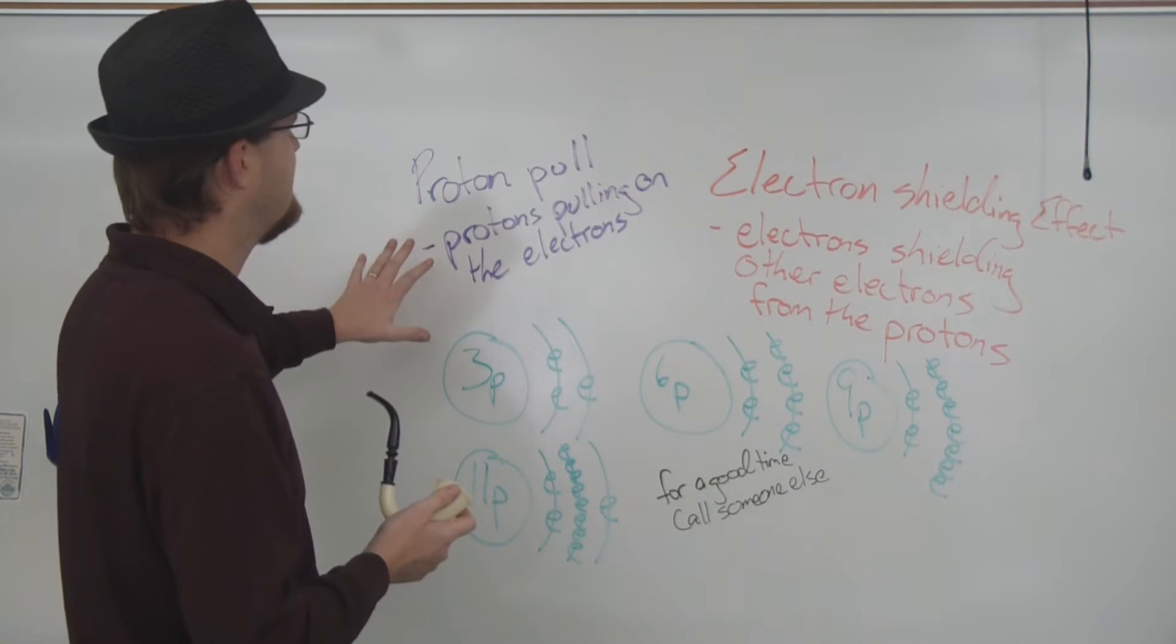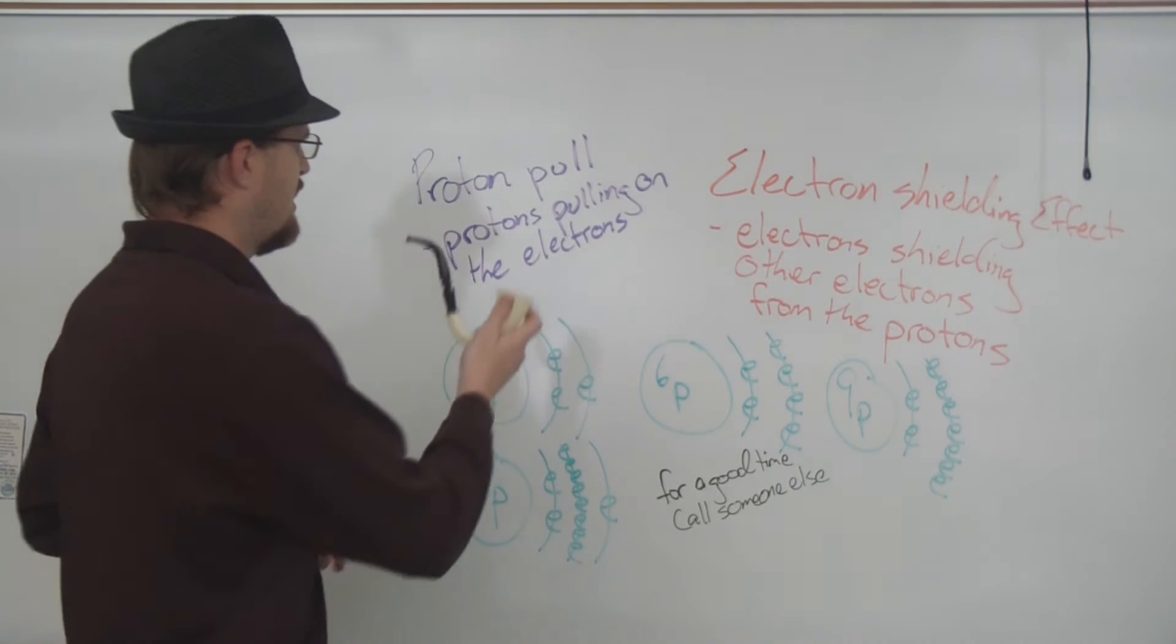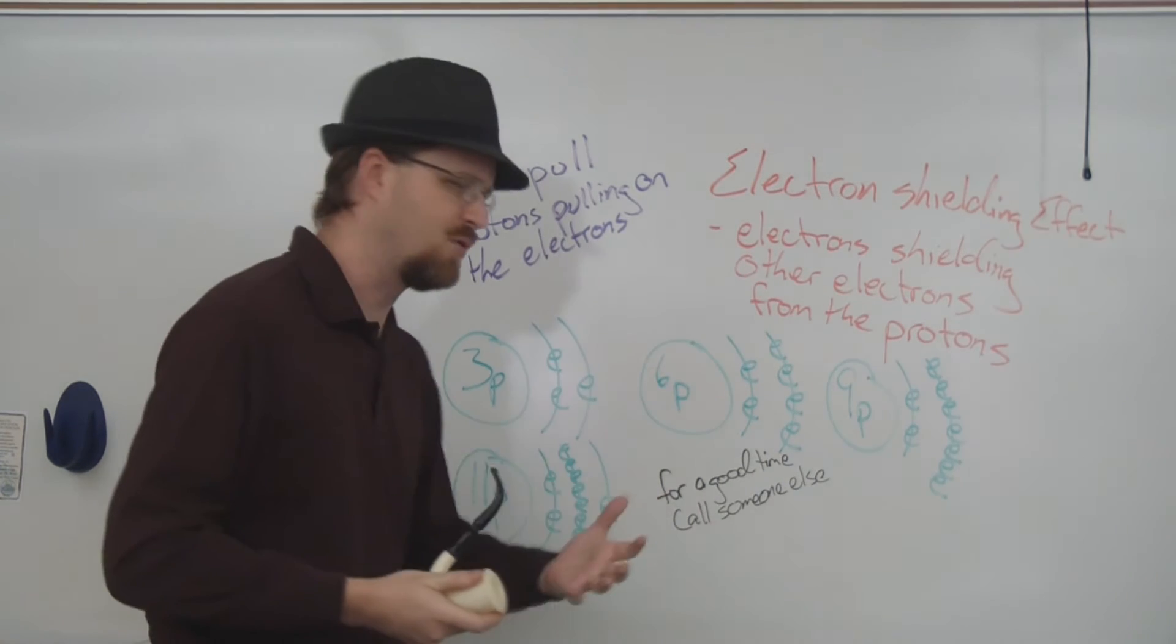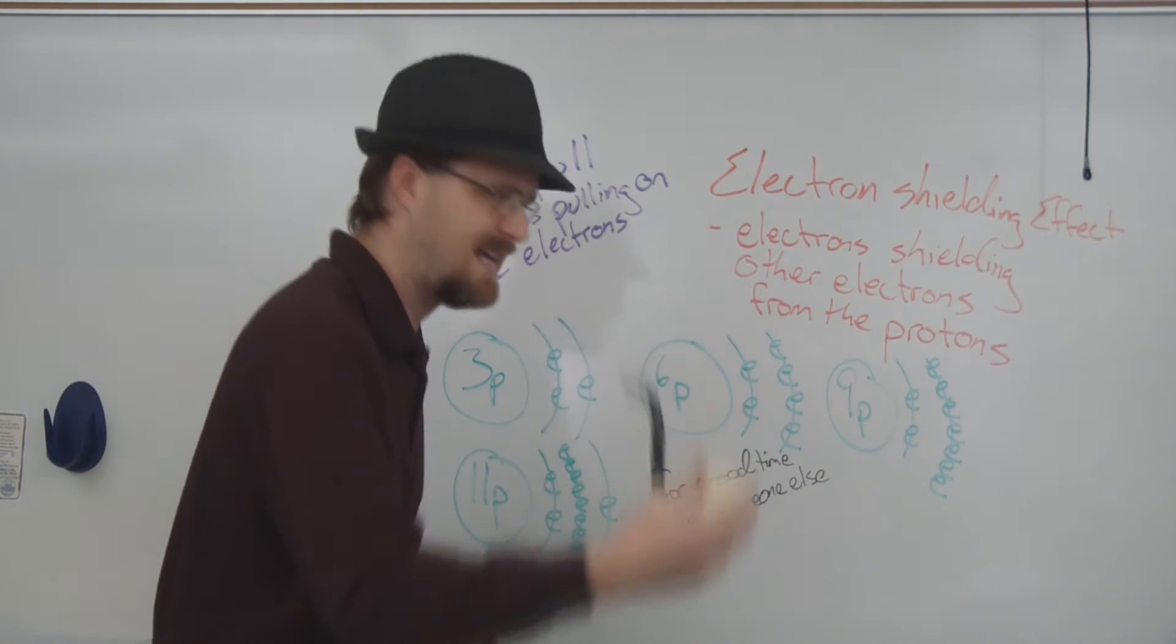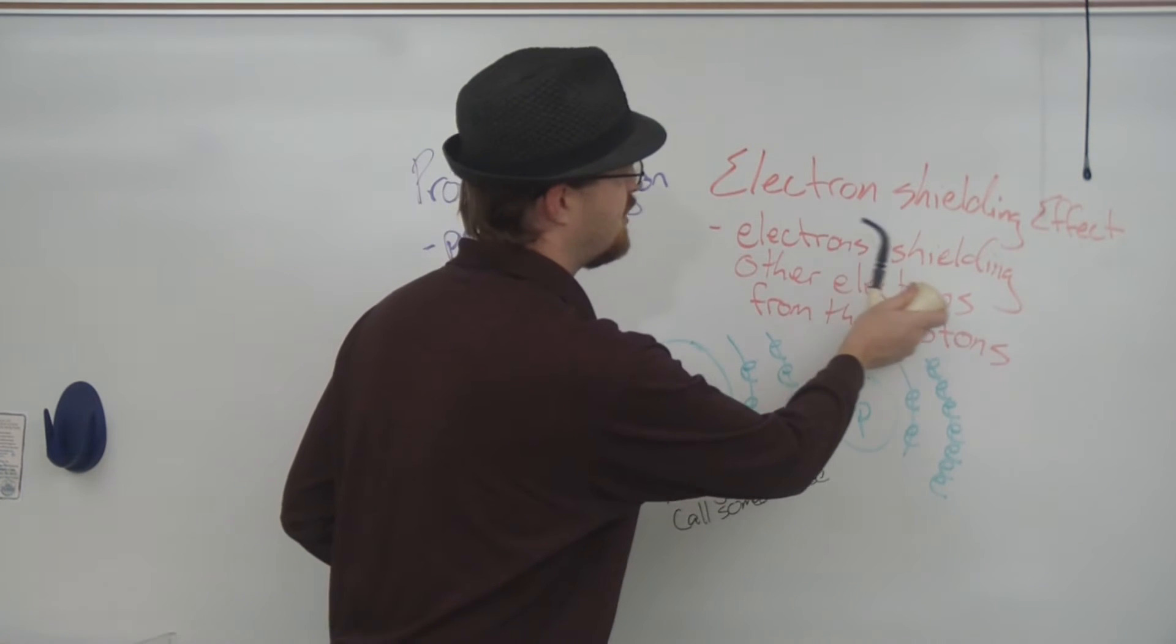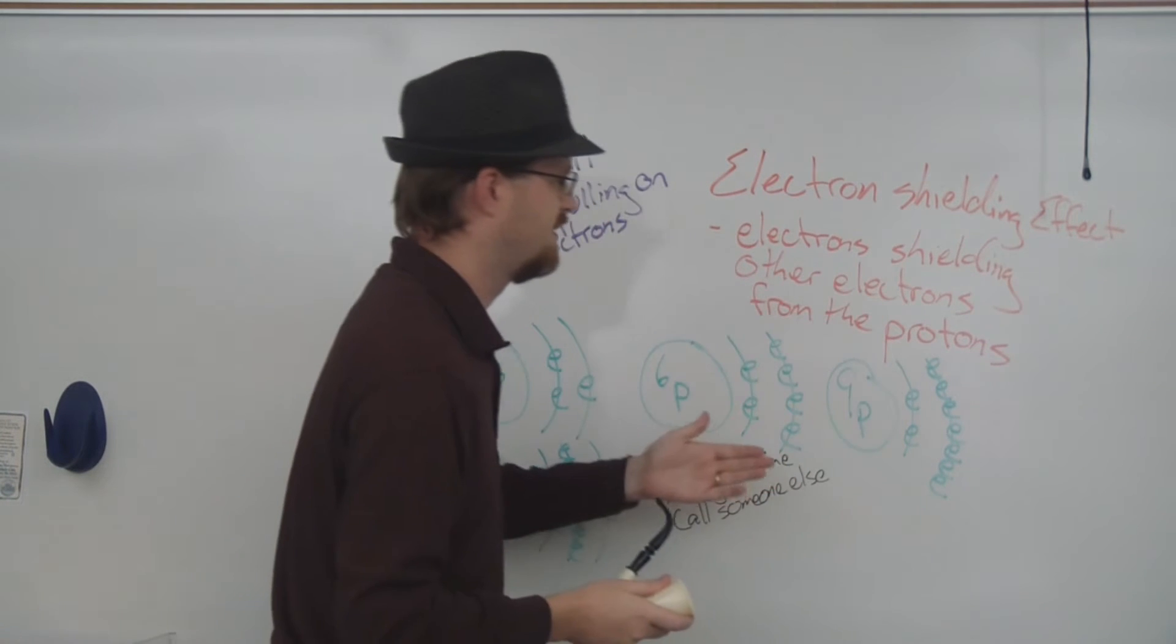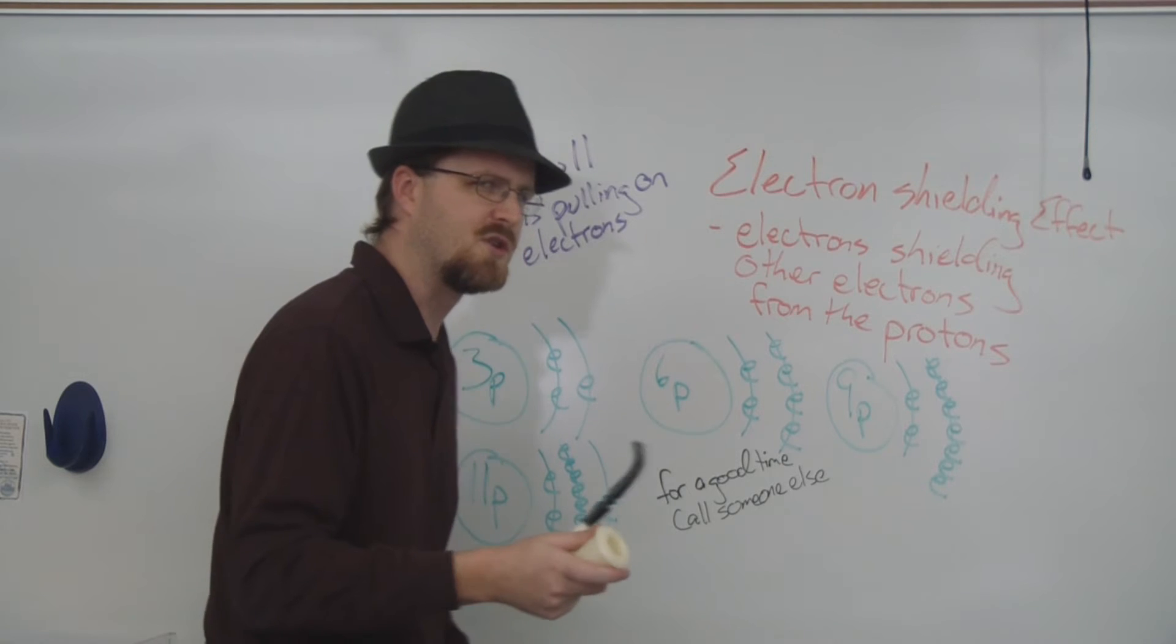So let's see, we've got proton pull, which is protons pulling on the electrons. Well that seems rather obvious. The protons are positive and would like to pull on the negative electrons. Over here it says the electron shielding effect. The electrons shielding other electrons from the protons. I wonder what that means.